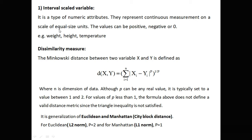How do we calculate the distance between interval scale variables, i.e., dissimilarity? Distance is dissimilarity. The Minkowski distance between two variables x and y is defined by a formula where n is the dimension and p is any real value, but is typically set between 1 and 2. For any value of p less than 1, the formula does not satisfy the distance metric since the triangle inequality is not satisfied. So p is generally set between 1 and 2.